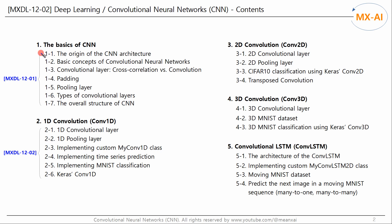In the last video, we briefly looked at the basic concepts and main components of CNN. In this video, we will take a closer look at a CNN model using 1D convolutional layers. We will examine the structure of the input and output of a 1D convolutional layer, and also look at a one-dimensional pooling layer. We'll implement a custom 1D convolutional layer class from scratch, and use it to predict time series and classify MNIST images — a regression problem and a classification problem.